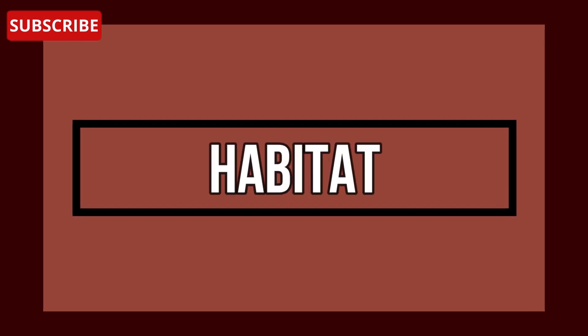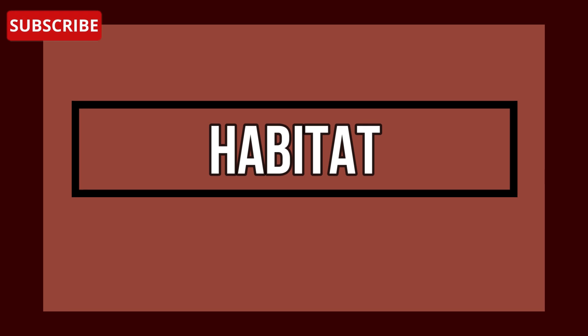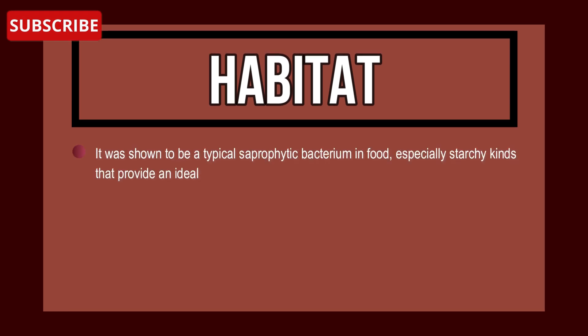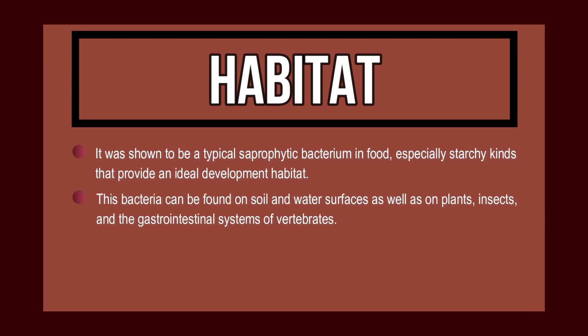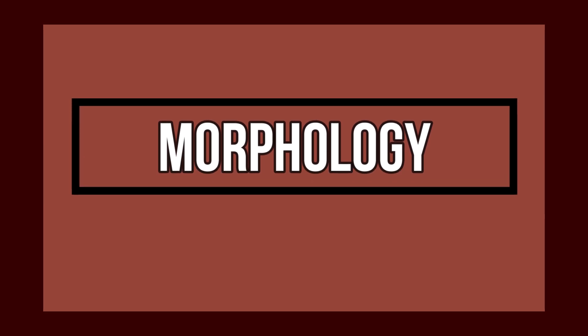Let's go to the habitat of Serratia marcescens. It was shown to be a typical saprophytic bacterium in food, especially starchy kinds that provide an ideal development habitat. This bacterium can be found on soil and water surfaces, as well as on plants, insects, and gastrointestinal systems of vertebrates.